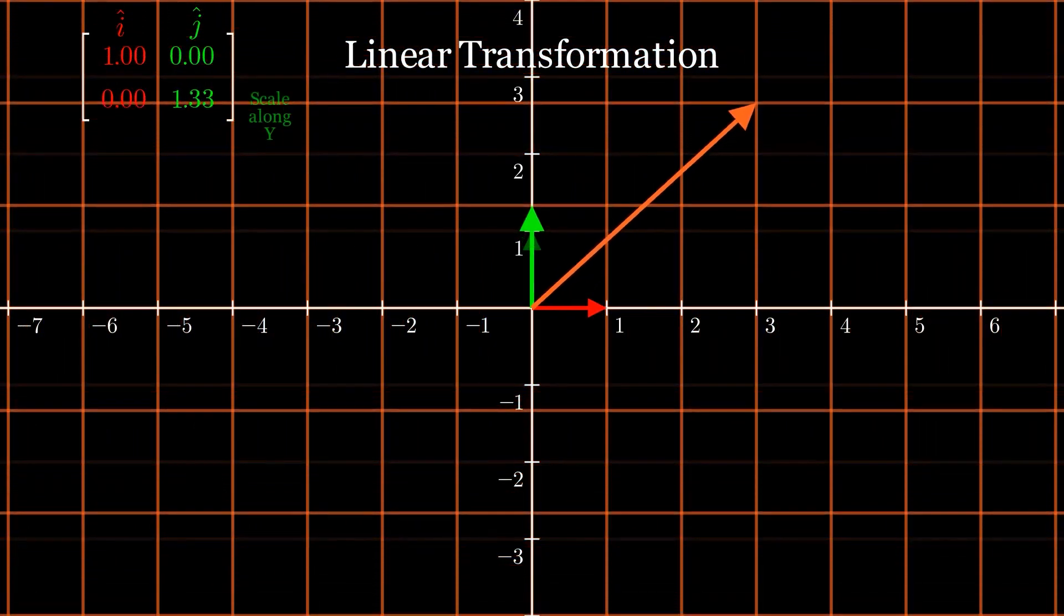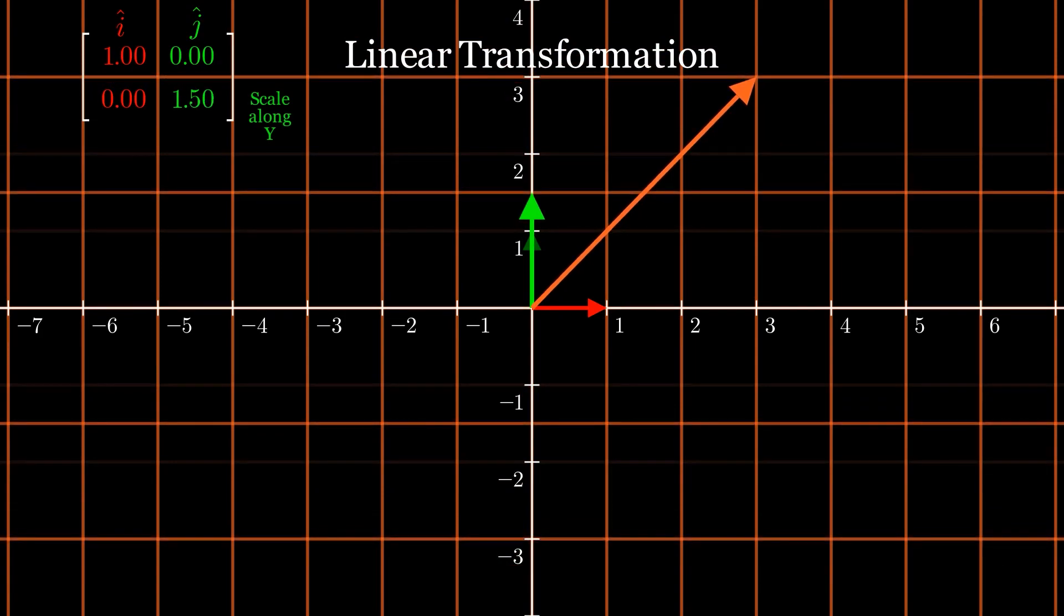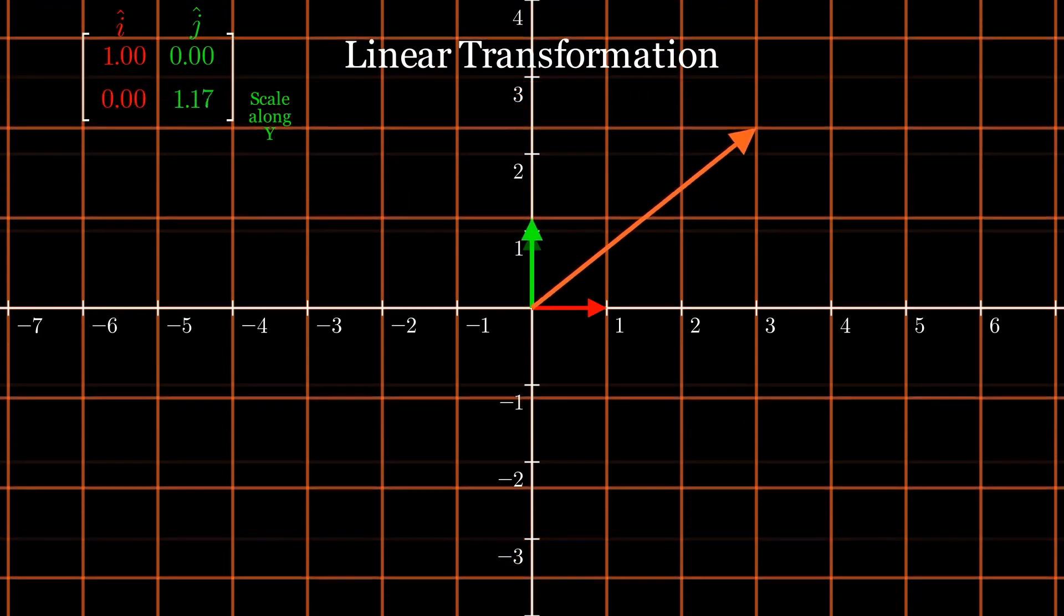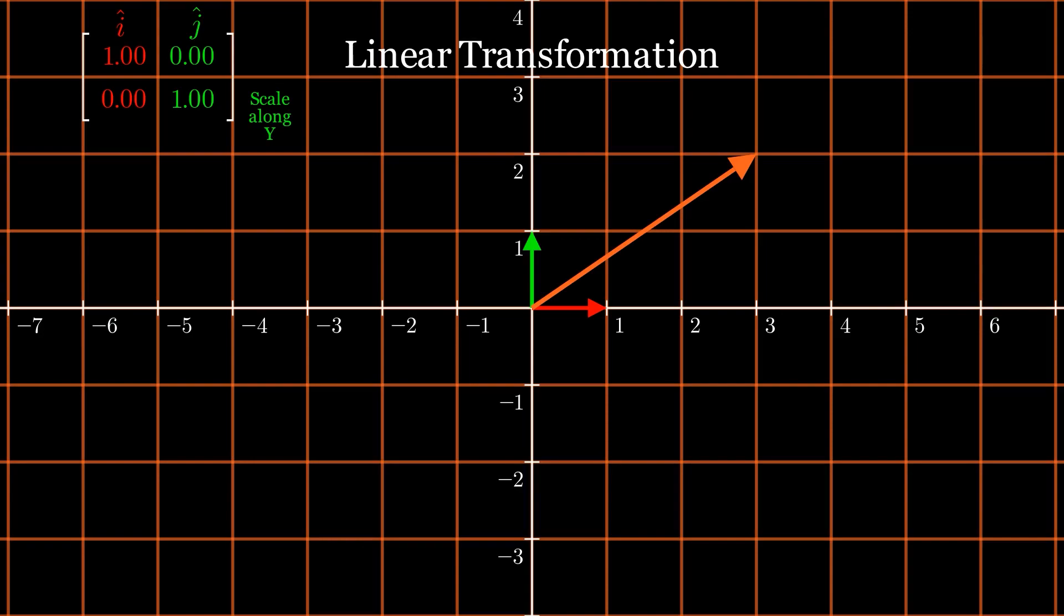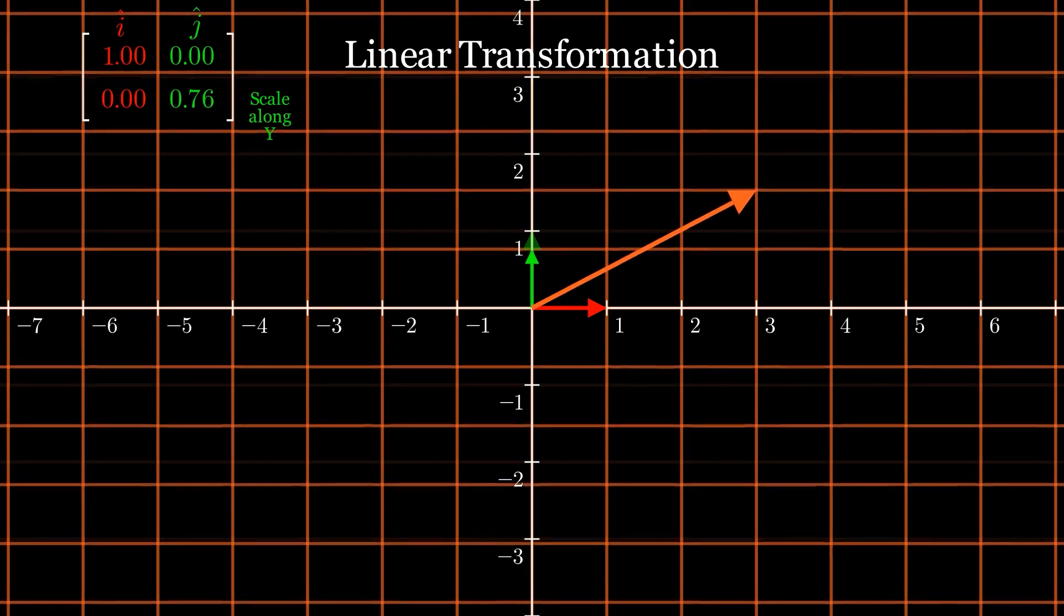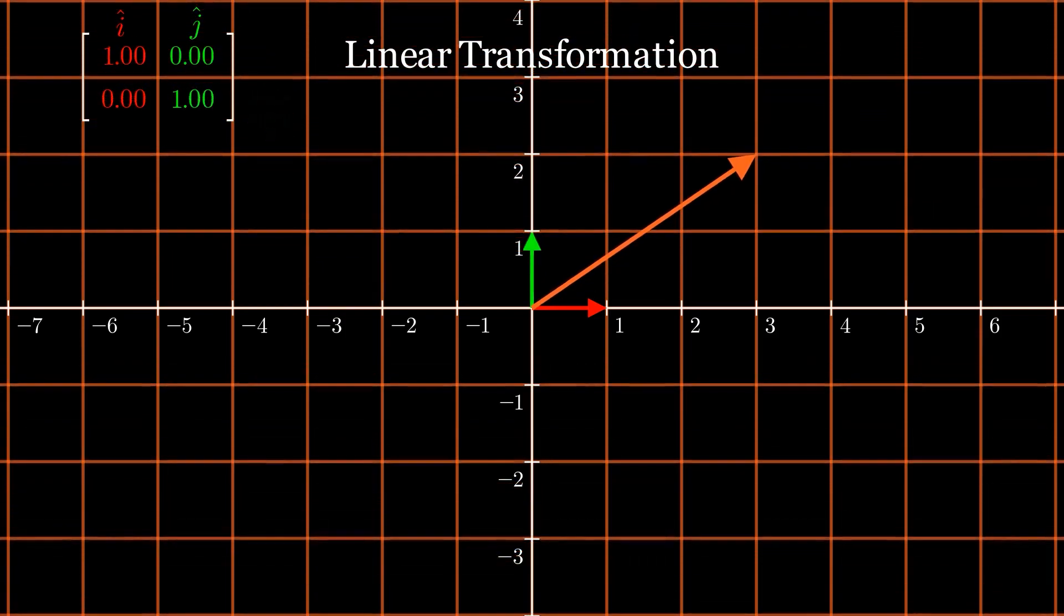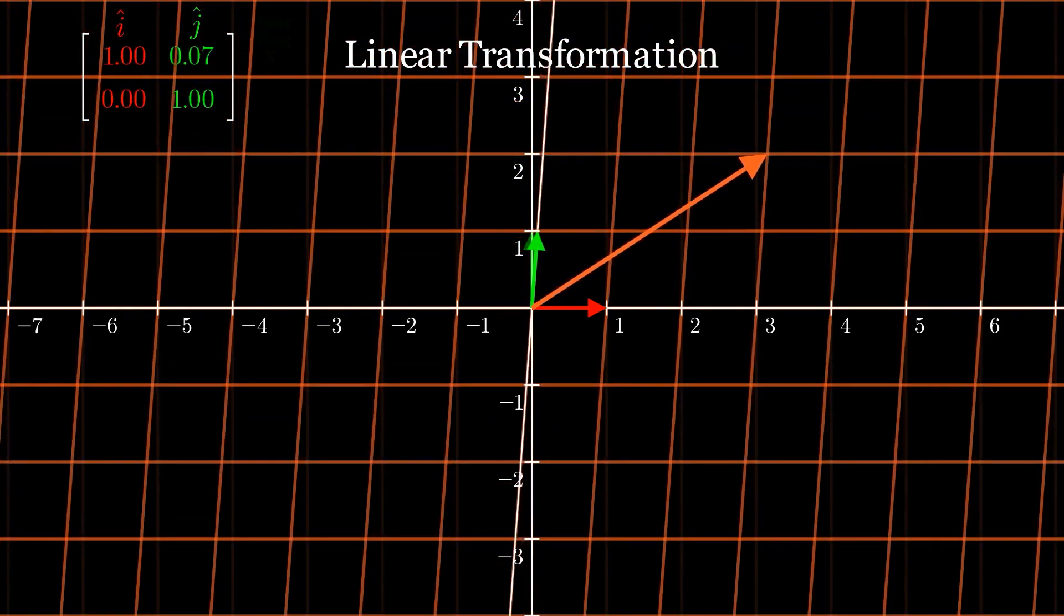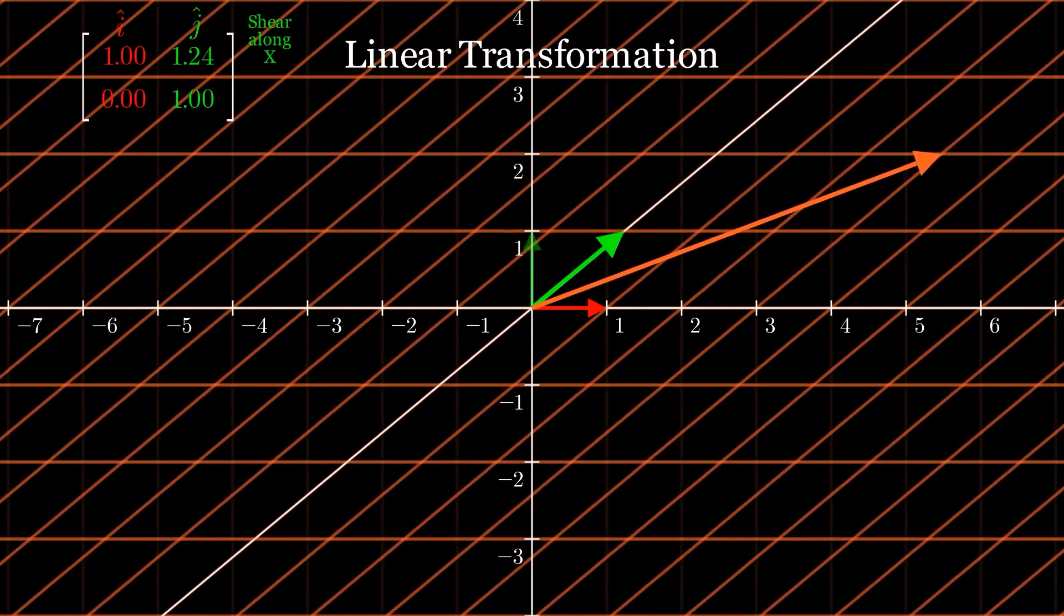If we stretch the vector j-hat along the x-axis, it results in what is called a shear along the x-axis.